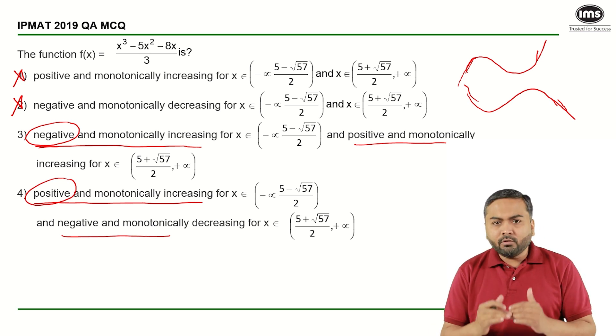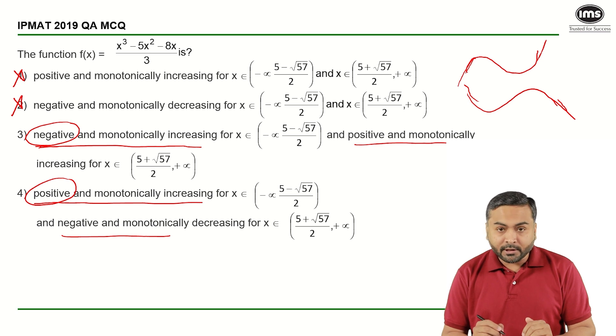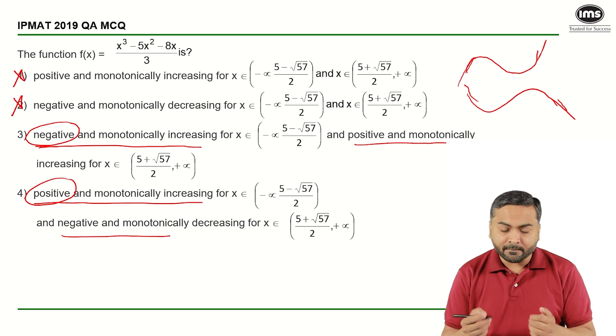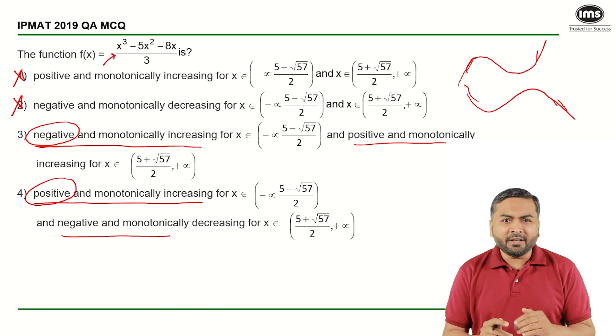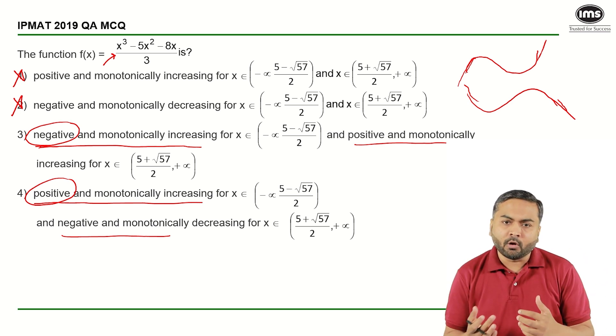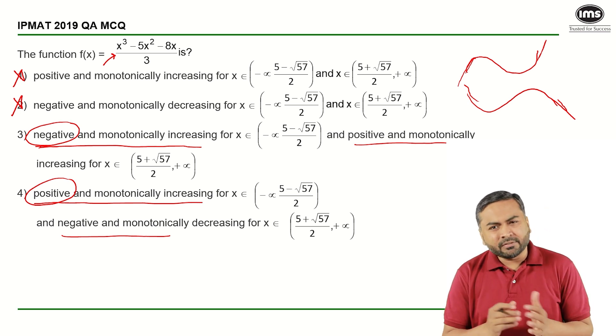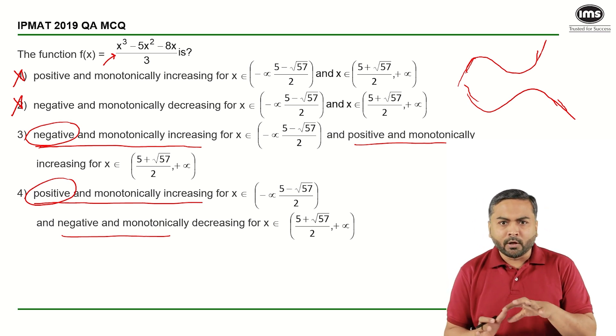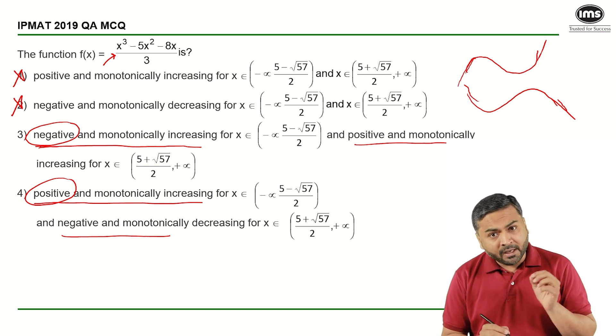So now let us look at: if I substitute x as minus infinity in this particular equation, I can clearly see that minus infinity raised to 3, like a very big negative number raised to 3, will always give me a very big negative number. Minus 5x square and minus 8x will not be that significantly large, right? So my answer will be negative.